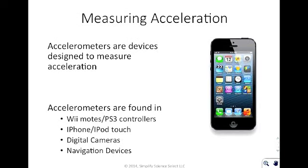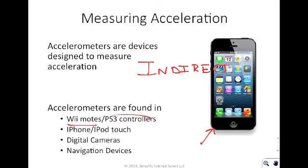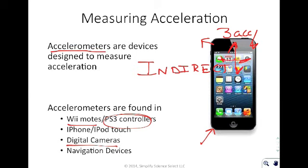There are a couple of ways to measure acceleration, but all of them are indirect. An accelerometer is a device used to measure acceleration, and they're commonly found in smartphones, Wii remotes, PlayStation 3 and 4 controllers, digital cameras, and navigation devices. In fact, your phone usually has roughly three accelerometers to measure movement in all three dimensions: up and down, side to side, and back and forth.